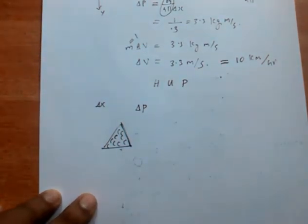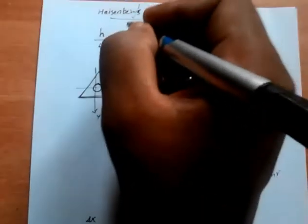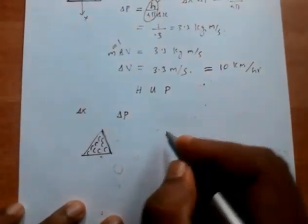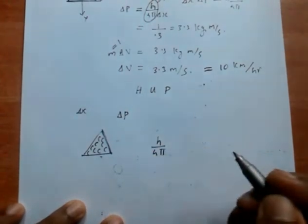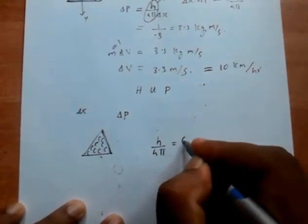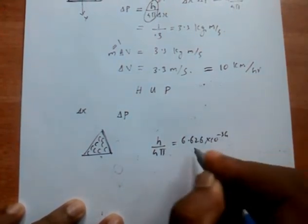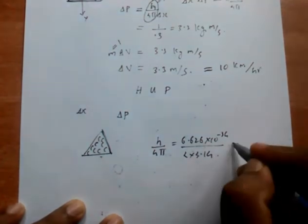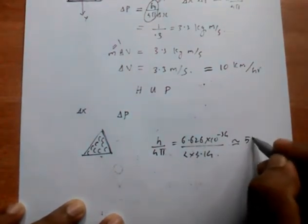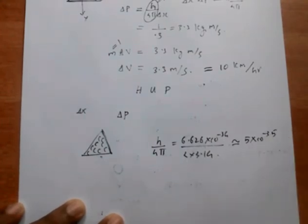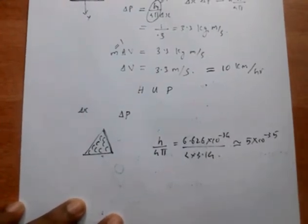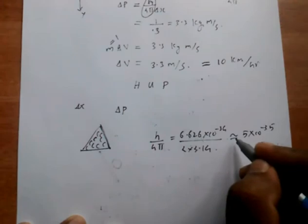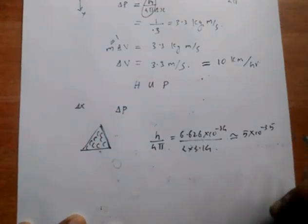Now let us come to reality. We had taken the value of h divided by 4π equal to 1. Now we are going to take the real value of h divided by 4π, which equals 6.626 times 10 raised to minus 34 divided by 4 times 3.14, which is approximately equal to 5 times 10 raised to minus 35. I am not taking the precise value because we just need to understand the concept, so h/4π is roughly 5 times 10 raised to minus 35.